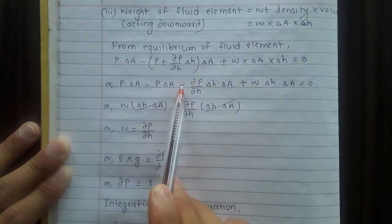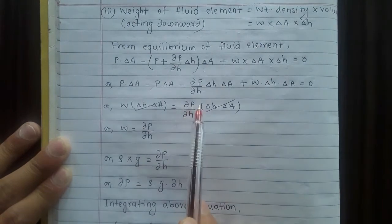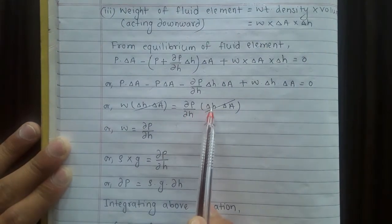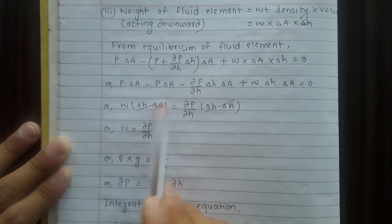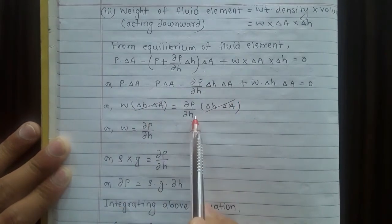W into delta A into delta H on the left equals dP/dh into delta h into delta A on the right. Delta A and delta H cancel.